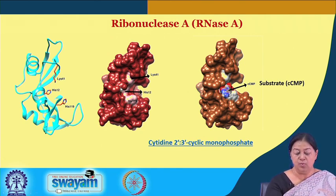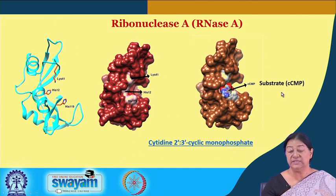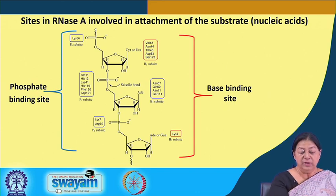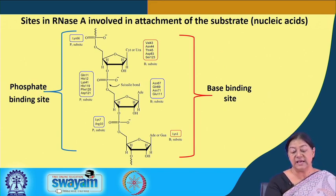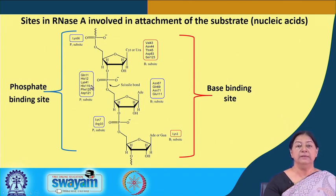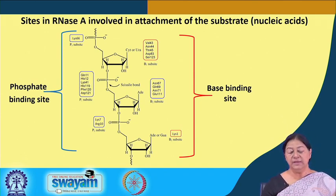The substrate of ribonuclease A is CCMP. The enzyme is shown bound to the substrate with a perfect fit in the active site. Looking at the chemistry: histidine 12, histidine 119, and lysine 41 are in what is called the phosphate binding site, which is negatively charged — demonstrating the complementarity that is extremely important in the enzyme's mechanism.